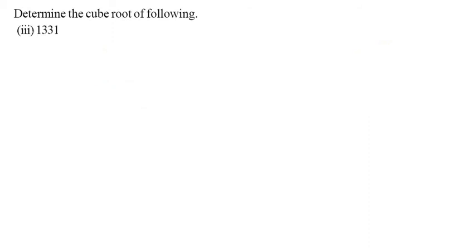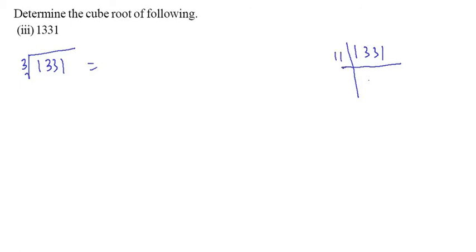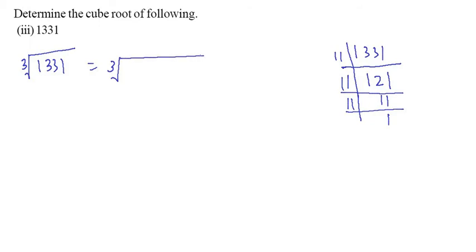Let us see the next question: cube root of 1331. Do the prime factorization of 1331. It is divided by 11: 11 × 1 = 11, 11 × 2 = 22, 11 × 1 = 11. Once again divided by 11: 11 × 1 = 11, 11 × 1 = 11. Once again divided by 11, so it becomes 1. So the prime factors of 1331: that is 11 × 11 × 11. It forms one triplet, so that is 11, and 11 is the answer of cube root of 1331.